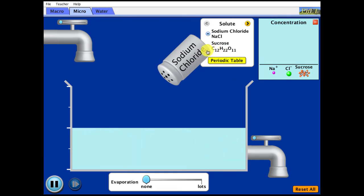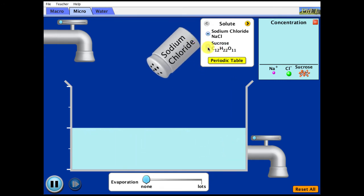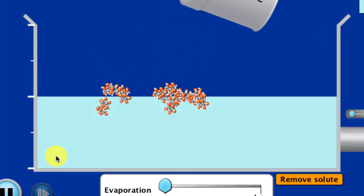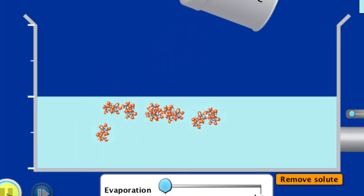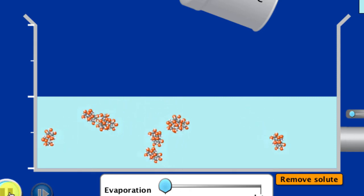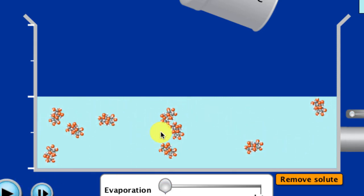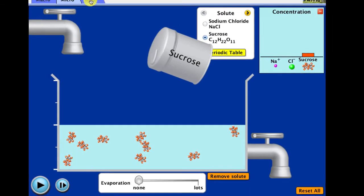If we put sugar in, the sugar molecules separate and spread out, but they are not dissociating and breaking apart. They're actually staying together as sugar molecules. The water is surrounding and separating out the sugar molecule, but not the atoms within it. There are no ions here, so therefore there is no conduction of electric current.